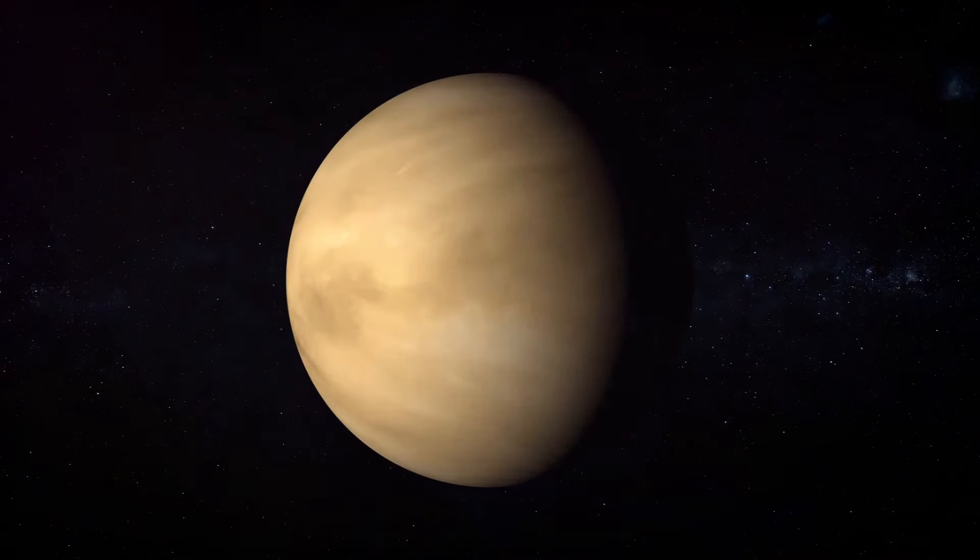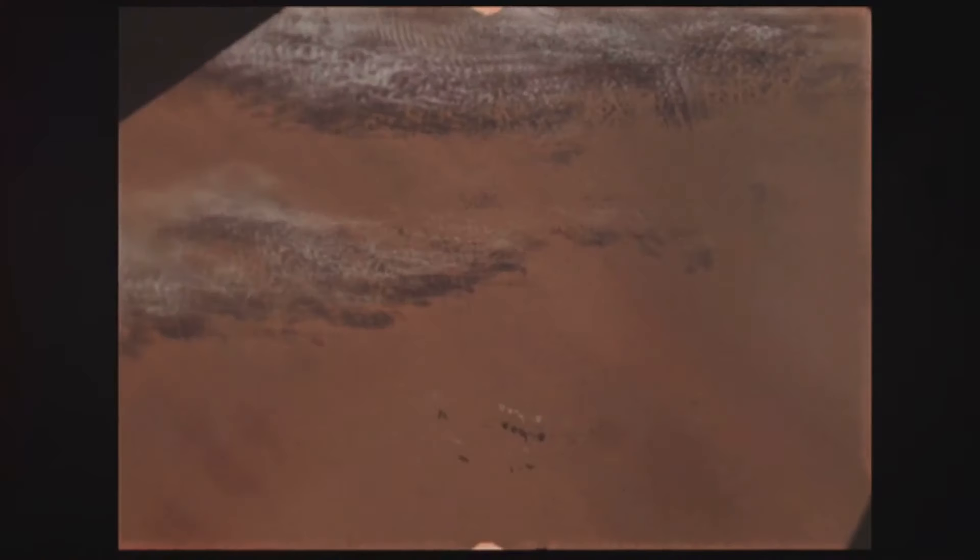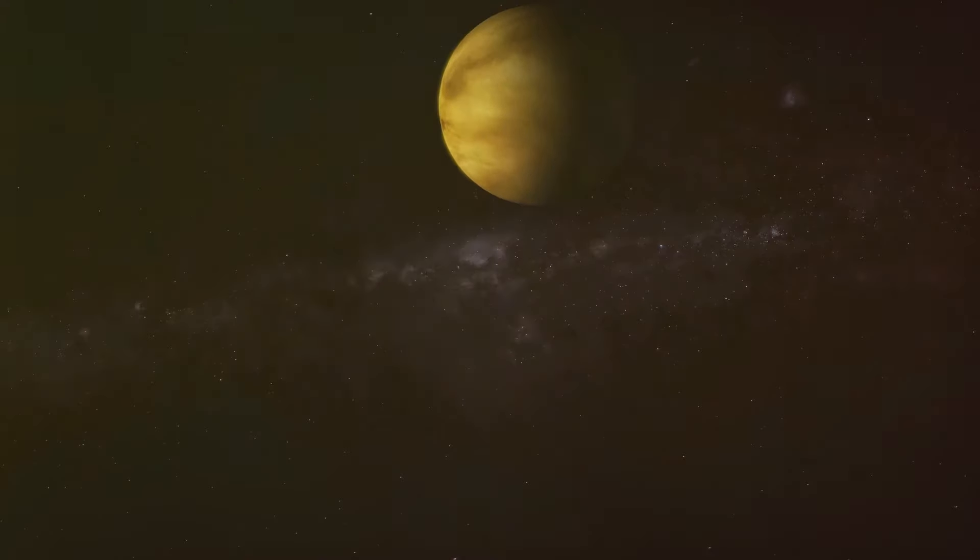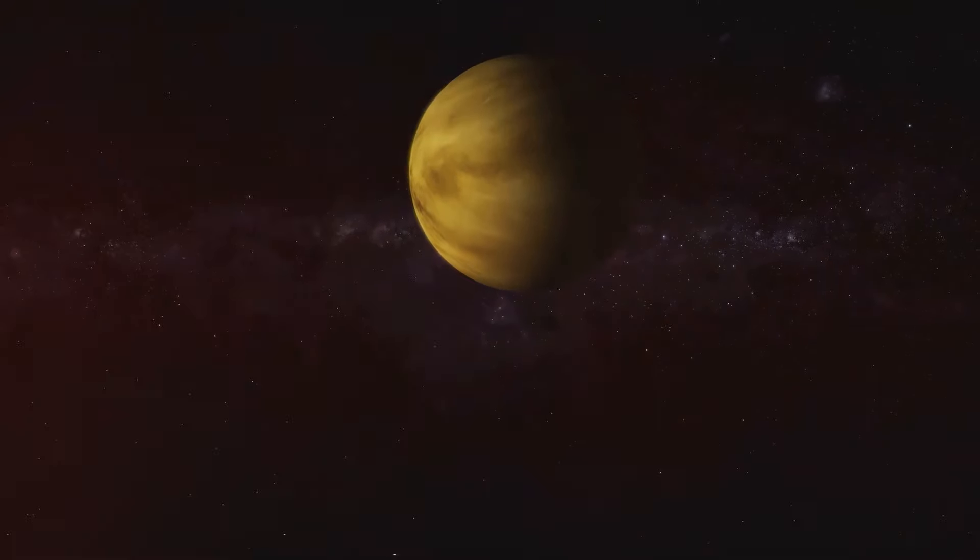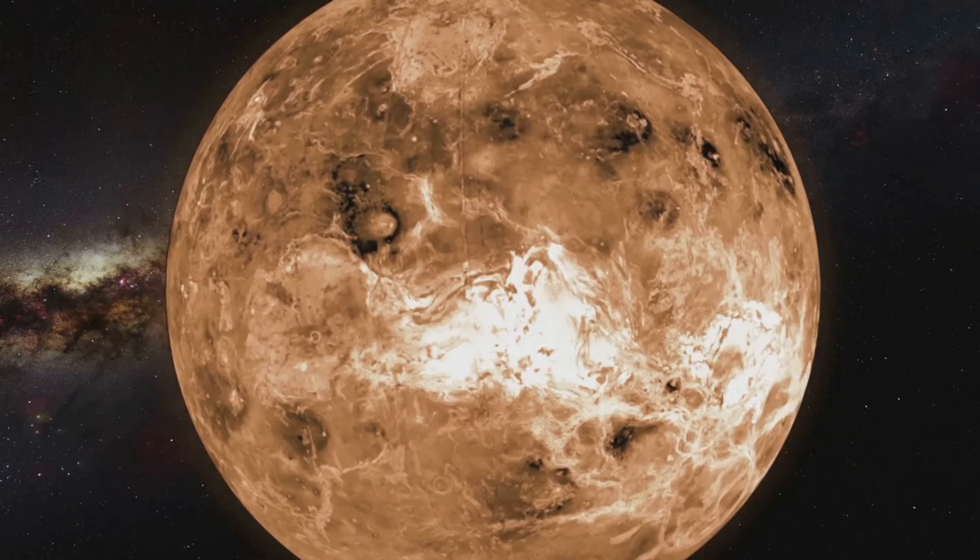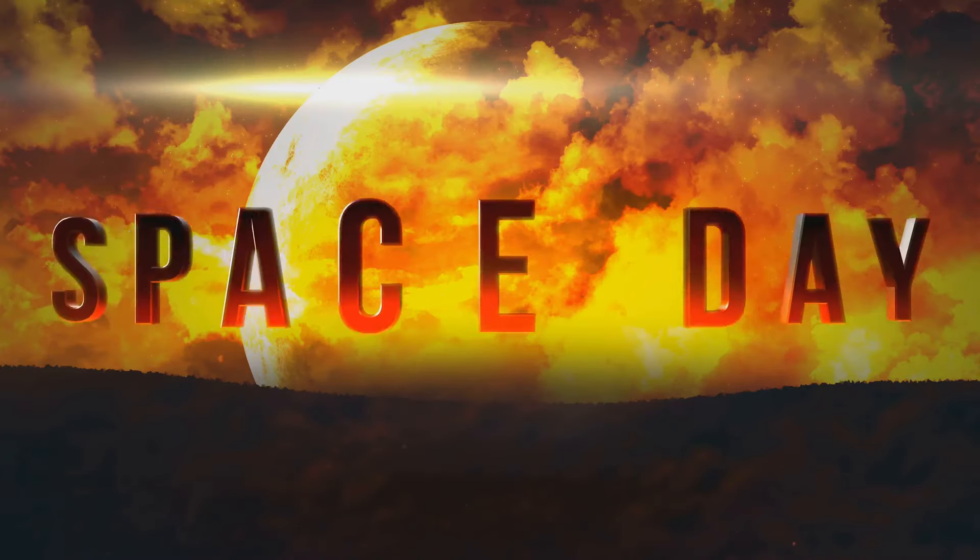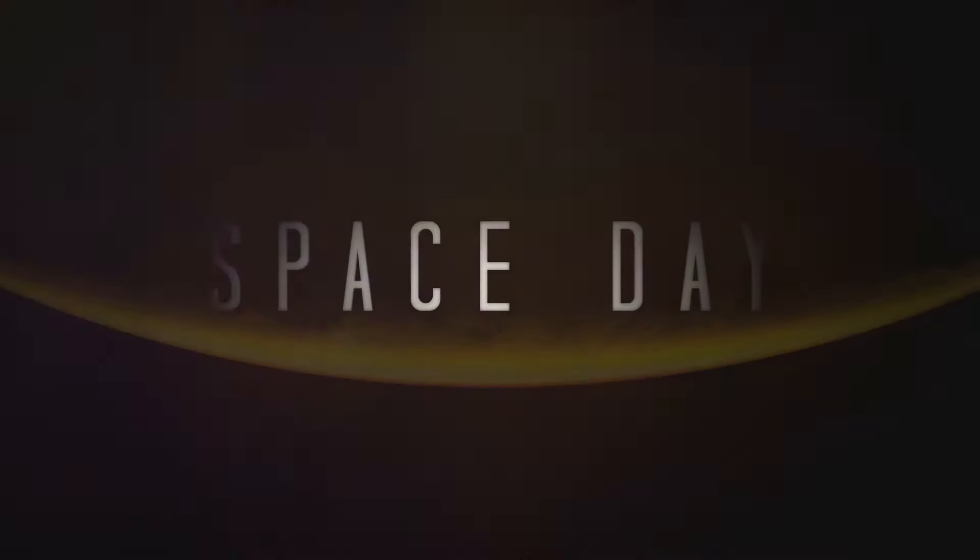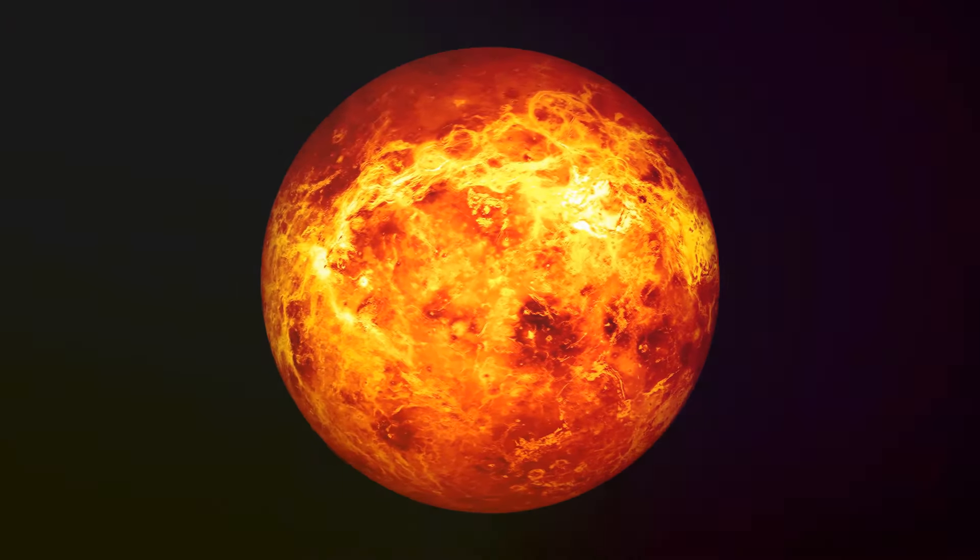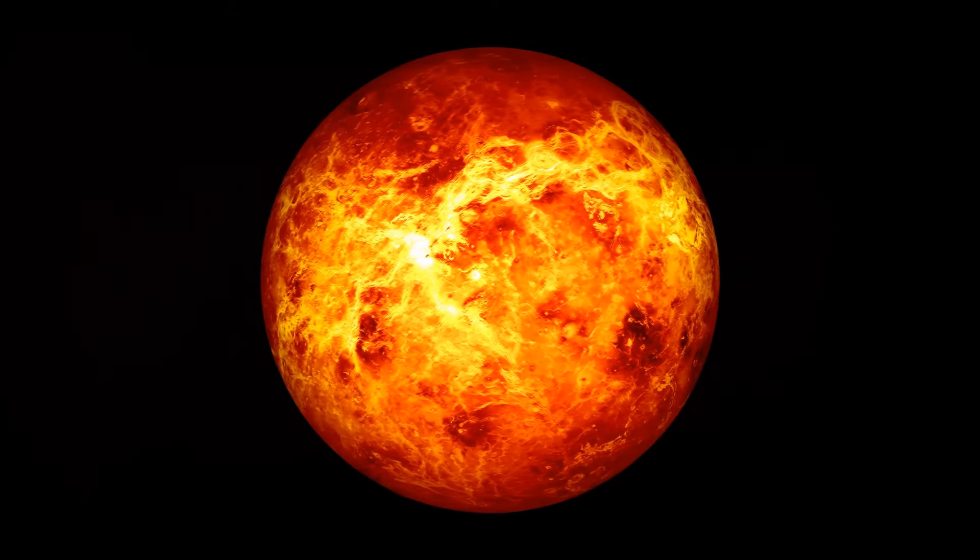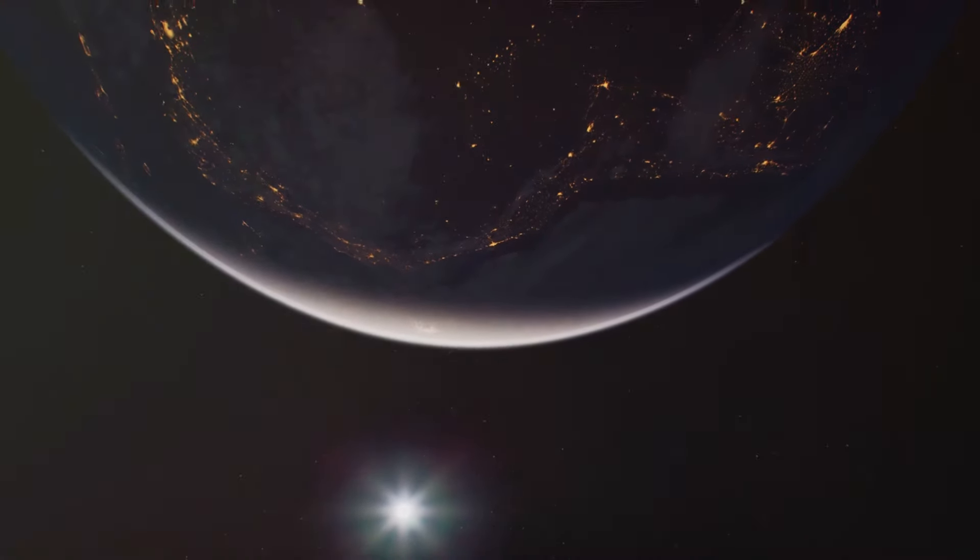Now imagine a planet where a day is longer than its year. That's Venus. This isn't science fiction, but a cosmic reality. Venus rotates incredibly slowly, taking about 243 Earth days to spin once on its axis. However, it speeds around the sun in just 225 Earth days. This peculiar behavior makes a Venusian day longer than its year, a truly mind-bending concept. But that's not all. Venus also rotates in the opposite direction to most planets in our solar system, so while the sun rises in the east and sets in the west on Earth, on Venus, it's the opposite.